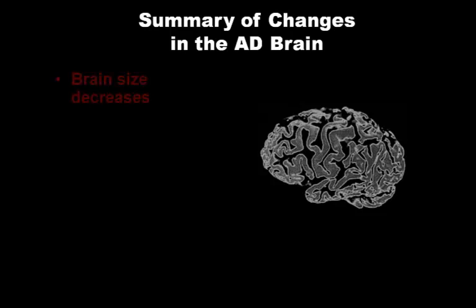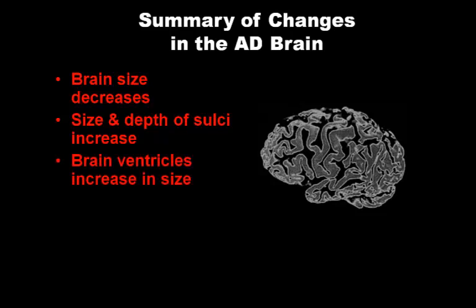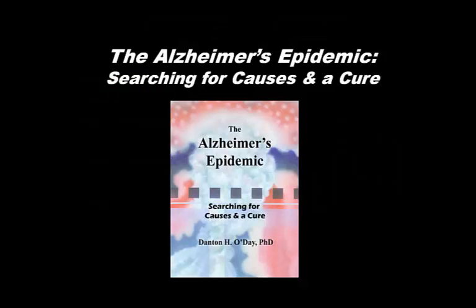In summary, the Alzheimer's brain decreases in size and the size and depth of sulci increase. Brain ventricles increase in size as well. Many brain changes can be assessed by brain imaging techniques that are becoming more useful in diagnosing and following the progression of Alzheimer's disease.